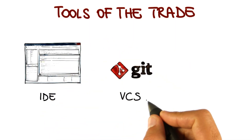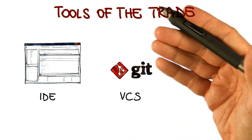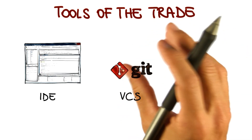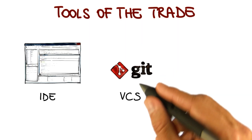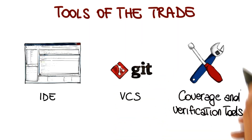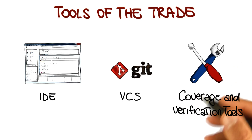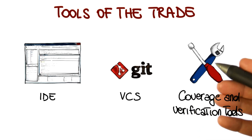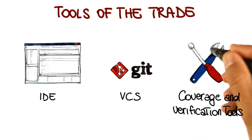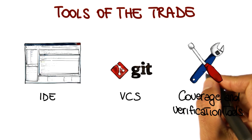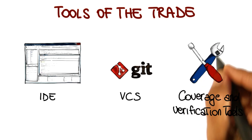We'll also use version control systems — systems that allow you to save, restore, and check the differences between different versions of the code. In particular, we will be working with Git. We will also look at other kinds of tools like coverage and verification tools. These are tools that can help you during testing, and I'm a big fan of these tools, so I'm really going to stress their usefulness and how you should use them in your development.